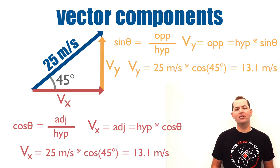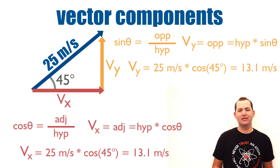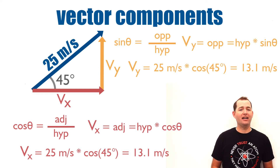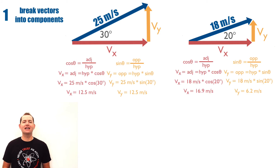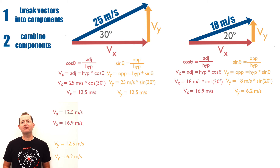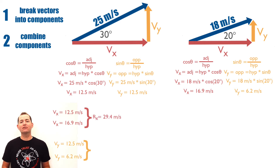These steps have broken down our vector into its x component and its y component. This process can be used to combine vectors. If we have two vectors that are not parallel to each other, our first step is again to break them down into their x and y components. Now we can combine the two vector components in the x direction and the two vector components in the y direction, giving us a resultant vector in the x direction and a resultant vector in the y direction.